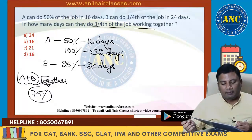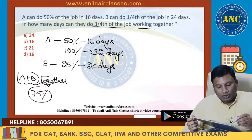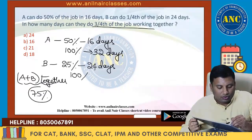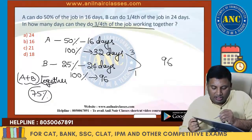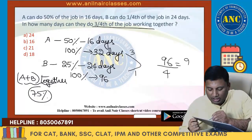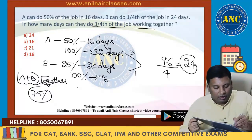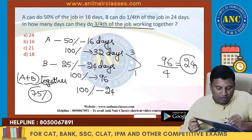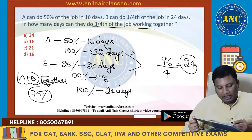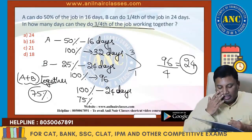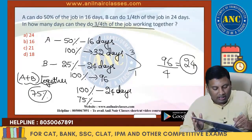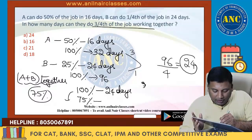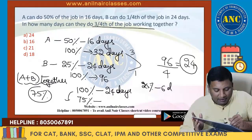100% corresponds to 32 days for A. Taking 96 as total units: A does 3 units/day, B does 1 unit/day. Together: 96/(3+1) = 96/4 = 24 days for 100%. We want 75% of the work: 25% takes 6 days, so 75% takes 18 days. Answer is 18 days.